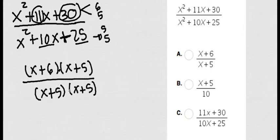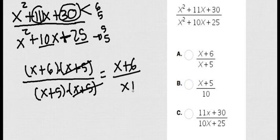Now since I'm multiplying right here I can go ahead and eliminate these two. And I just have x plus 6 over x plus 5. And that's it.